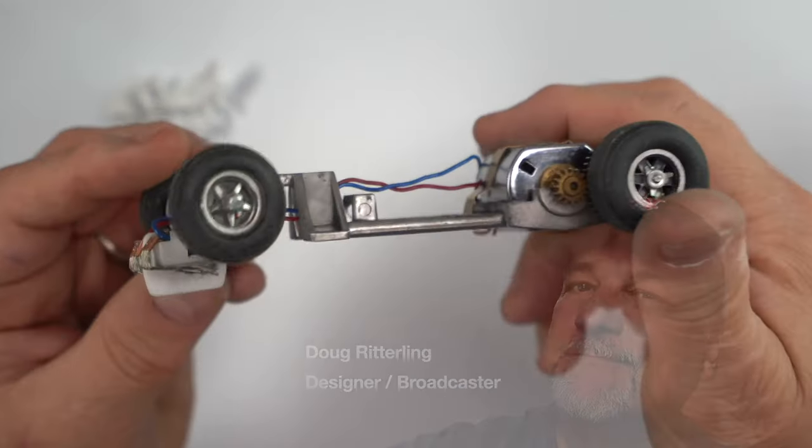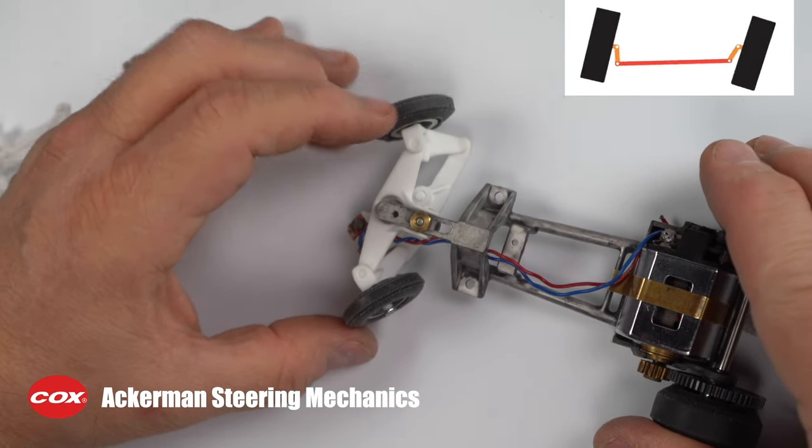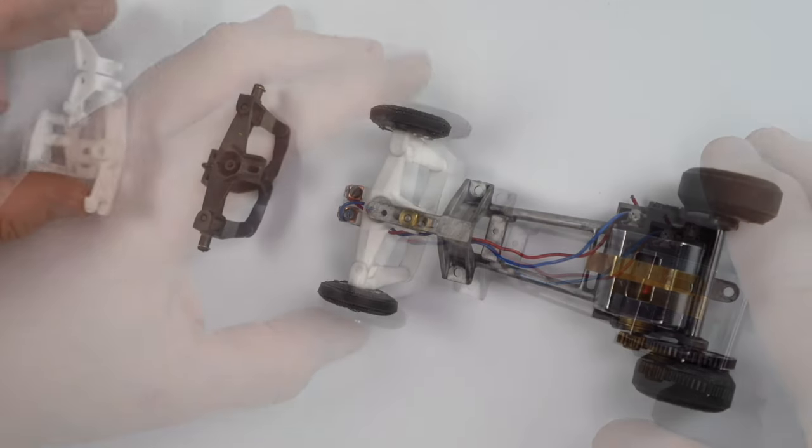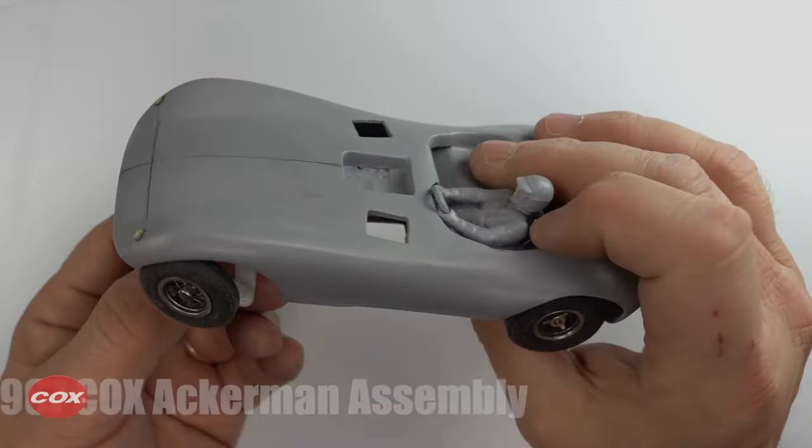I am Doug, thrilled to have you here on the Full Earth Workshop. So what is the Ackerman system? It's a simple system developed in 1817 for carriages, and it's still used in automobiles today.